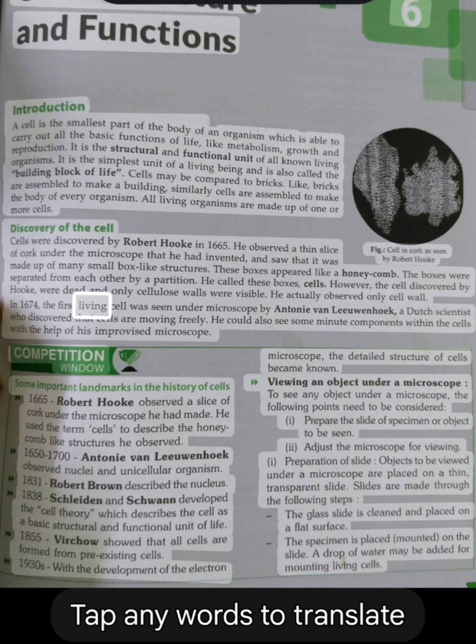In 1674, the first living cell was seen under microscope by Antoni van Leeuwenhoek, a Dutch scientist who discovered that cells are moving freely. He could also see some minute components within the cells with the help of his improvised microscope.